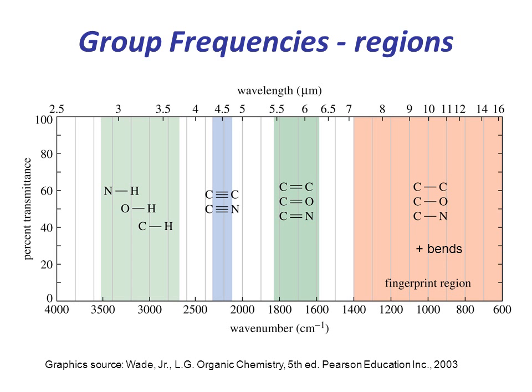In order to interpret spectra, you should be aware of the frequency ranges of common functional groups. Stretches involving bonds to hydrogen will occur at the highest frequencies, around 3,000 wave numbers, followed by triple bonds, double bonds, and single bond stretches.